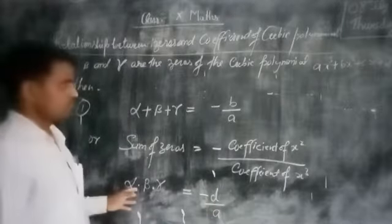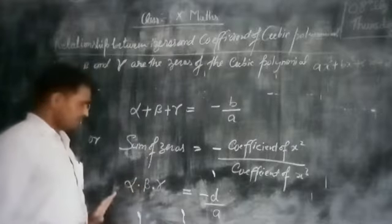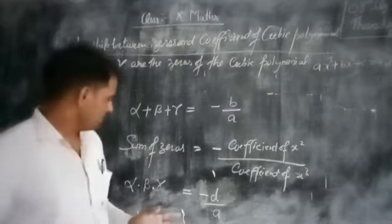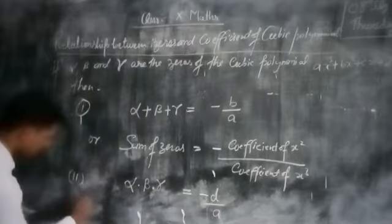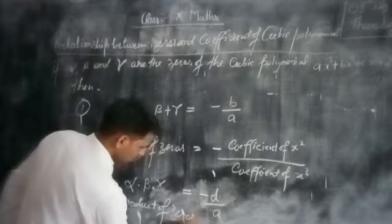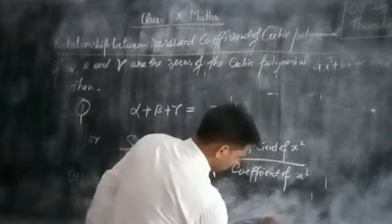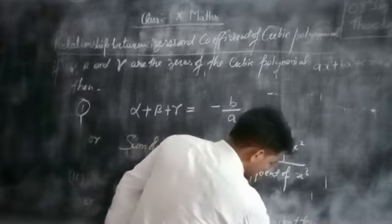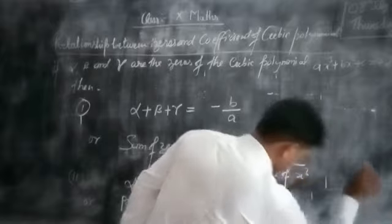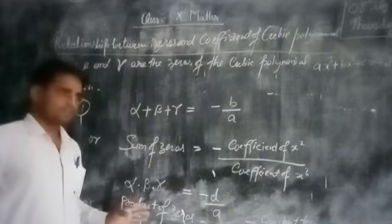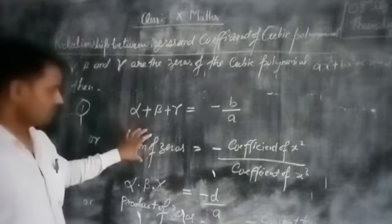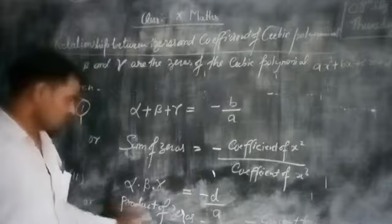This is the second relationship, which is expressed as the product of zeros. Alpha into beta into gamma — and we know that alpha, beta, gamma are the zeros of the polynomial — so the product of zeros is equal to minus the constant term upon the coefficient of x cubed. This is the basic formula. Relationship one is the sum of zeros and relationship two is the product of zeros.